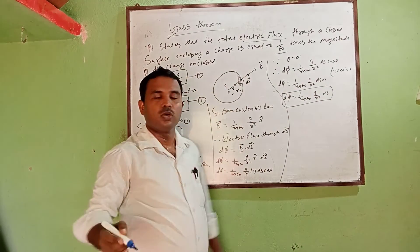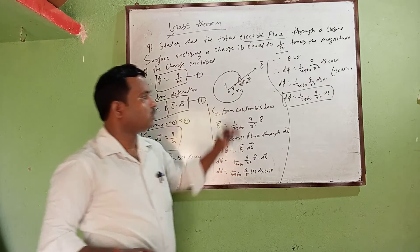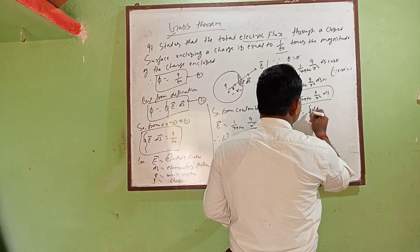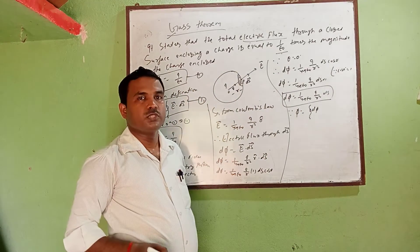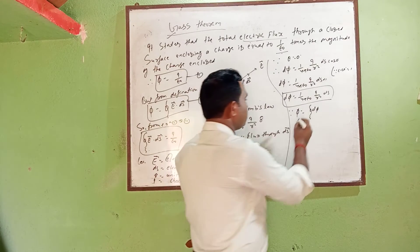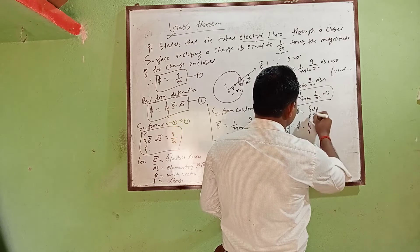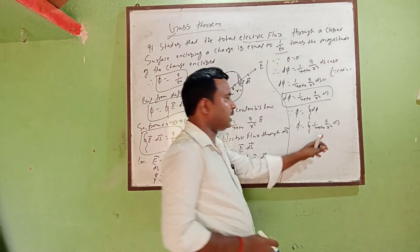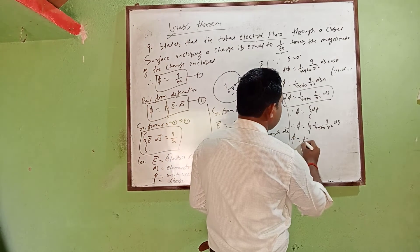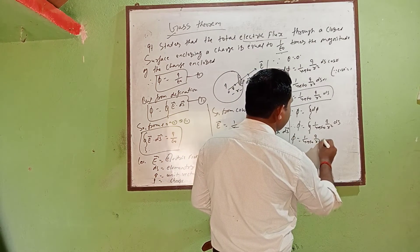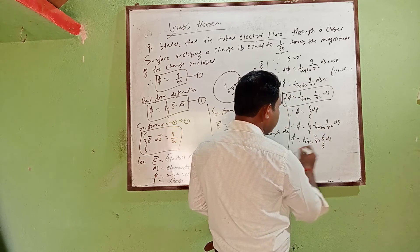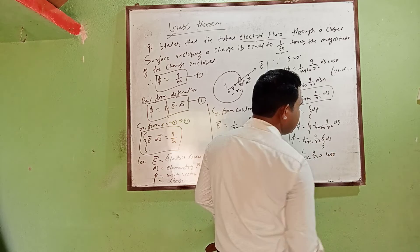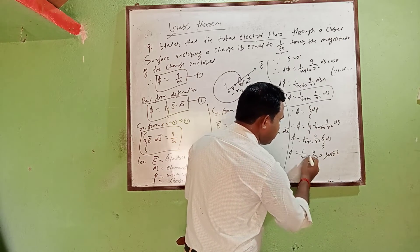To find the total electric flux through the whole surface, phi equals the closed surface integral of d phi. Substituting, phi equals the closed integral of 1 by 4 pi epsilon naught times Q by r square times dS. Since all constants can be taken out, phi equals 1 by 4 pi epsilon naught times Q by r square times the closed integral of dS, which equals 4 pi r square.